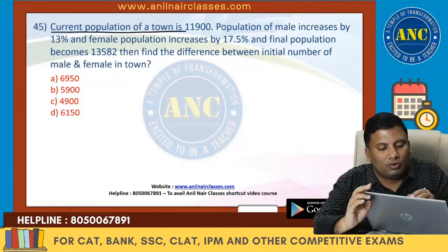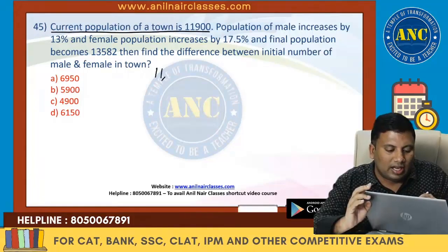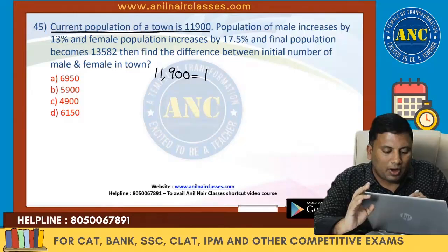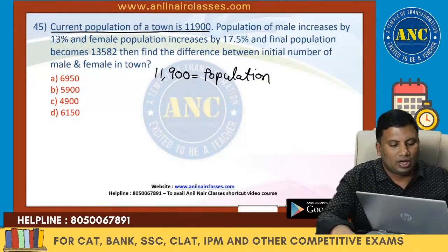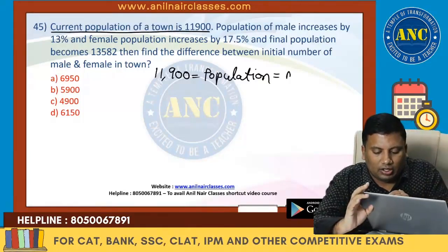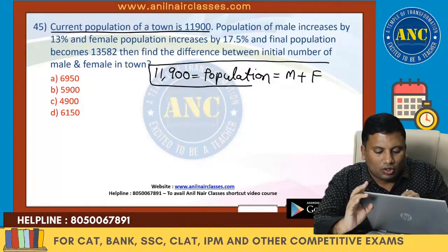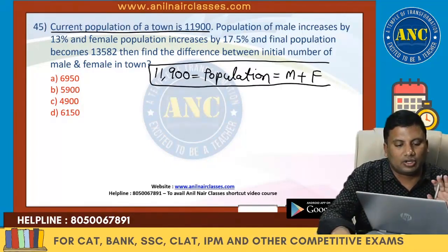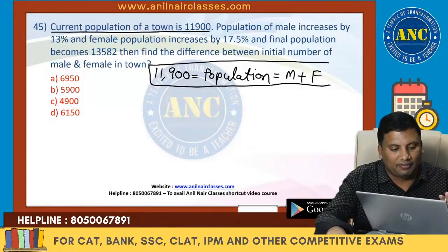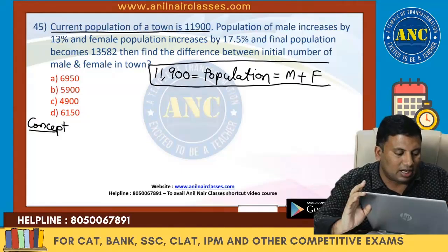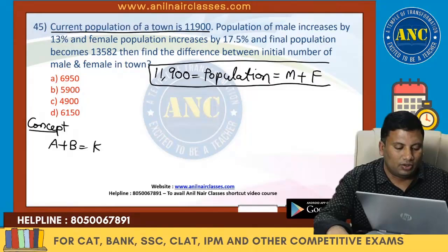Current population of a town is 11,900. This is the population — total number of males and total number of females. Total number of males and total number of females constitute the current population of a town. First CA concept: A plus B equivalent to K.